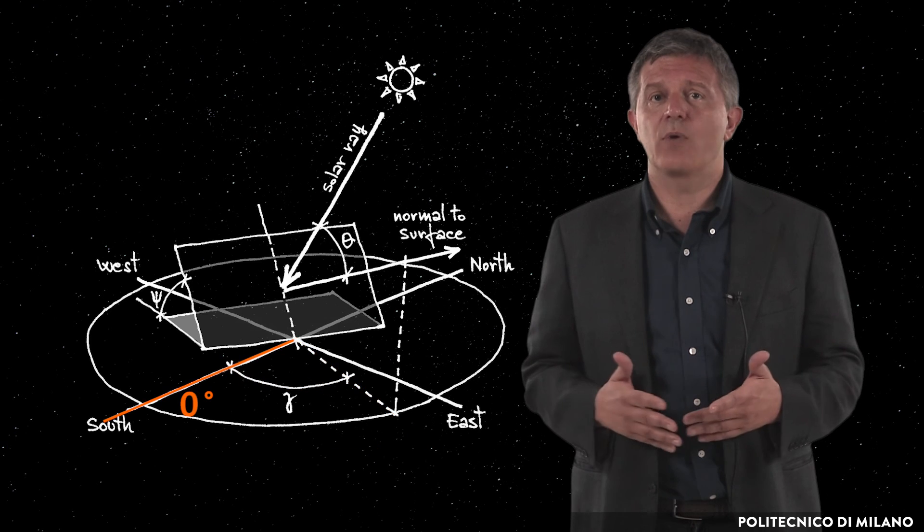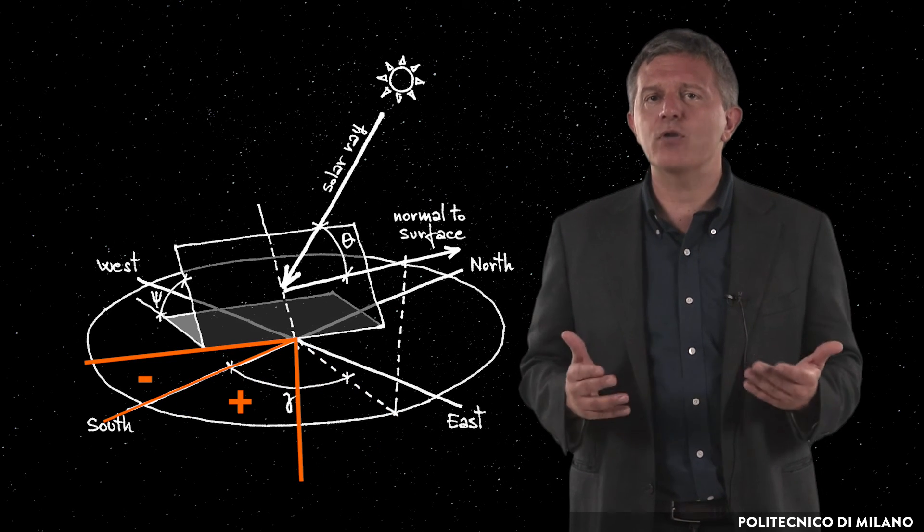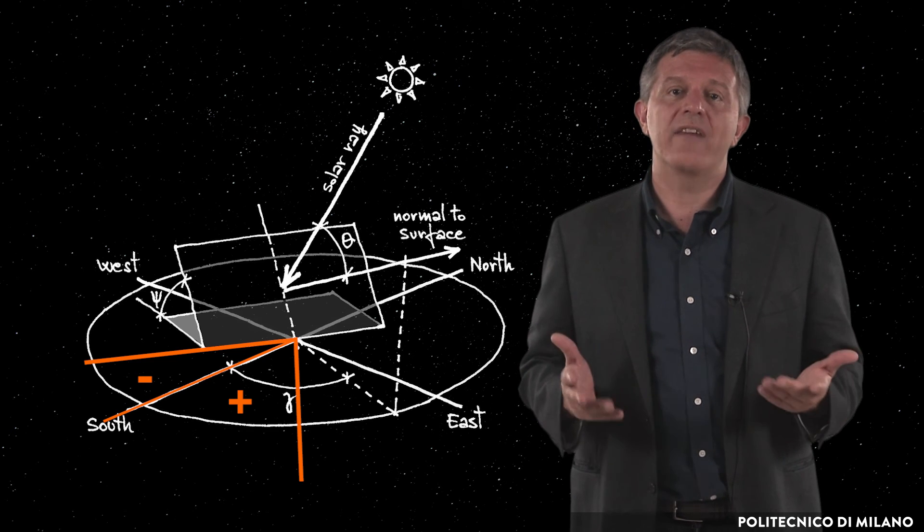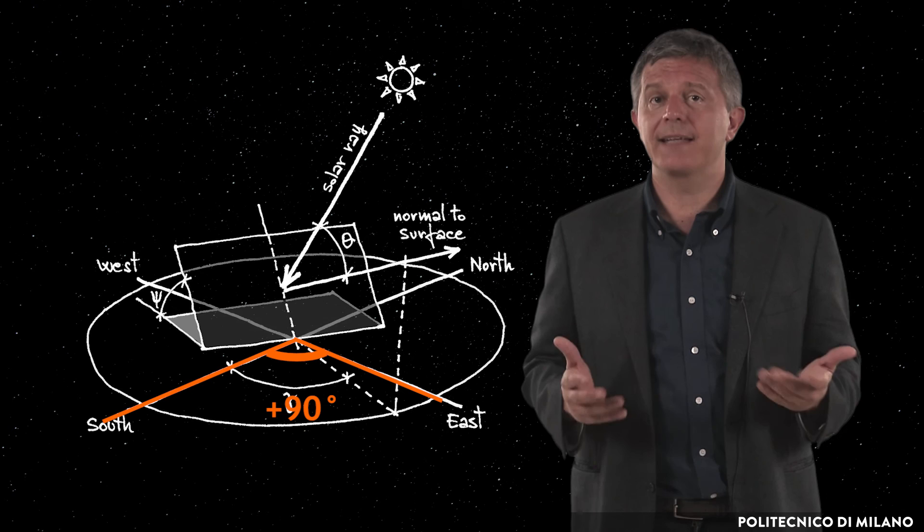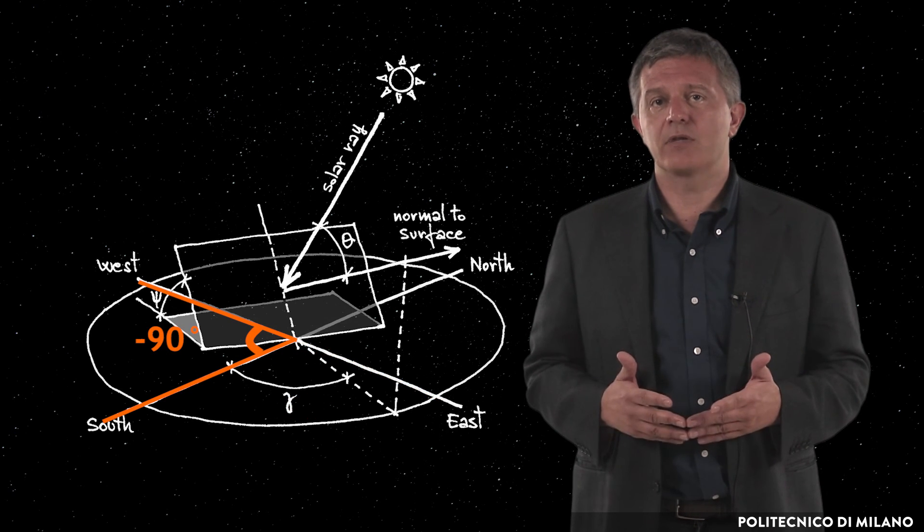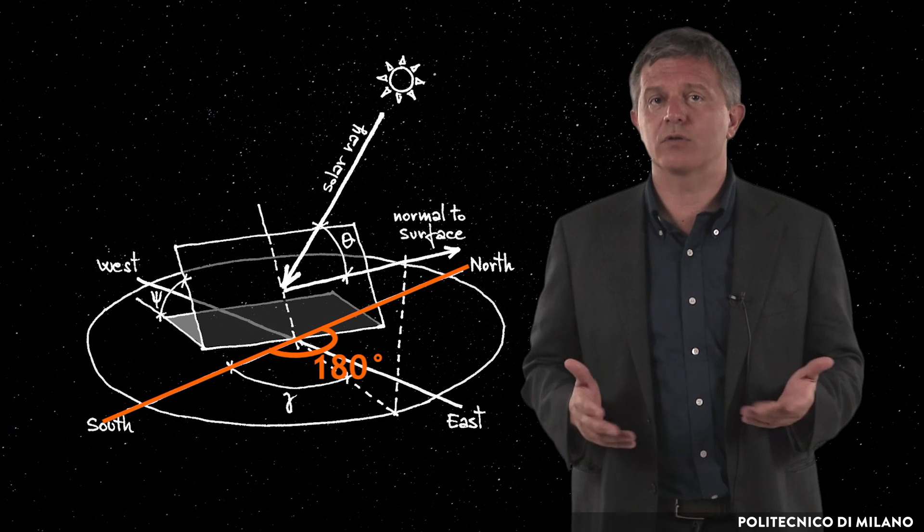It is zero degrees when the orientation coincides exactly with the south and takes positive values eastward and negative westward, so that you have gamma equal to plus 90 degrees for east, gamma equal to minus 90 degrees for west and gamma equal to 180 degrees for north orientation.